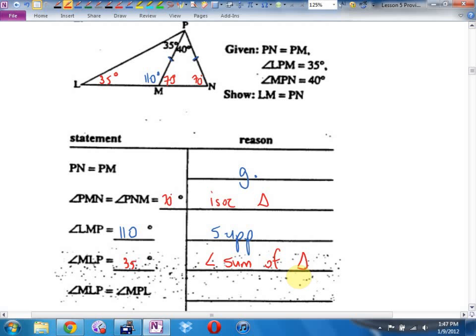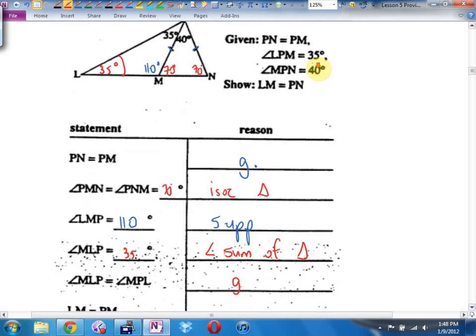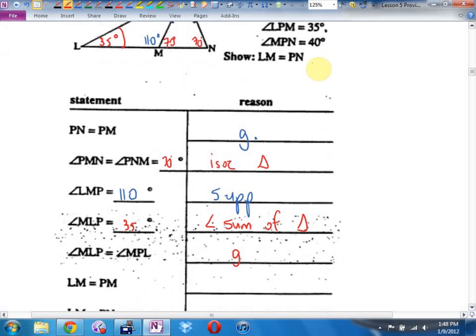Then it says, angle MLP, this guy, equals angle MPL, this guy. Do they equal each other? Yeah? How do I know? They gave me that. They gave me the 35, and it's also going to be an isosceles triangle, which is going to be helpful. Need to make this a little bit smaller to fit it all on one page.